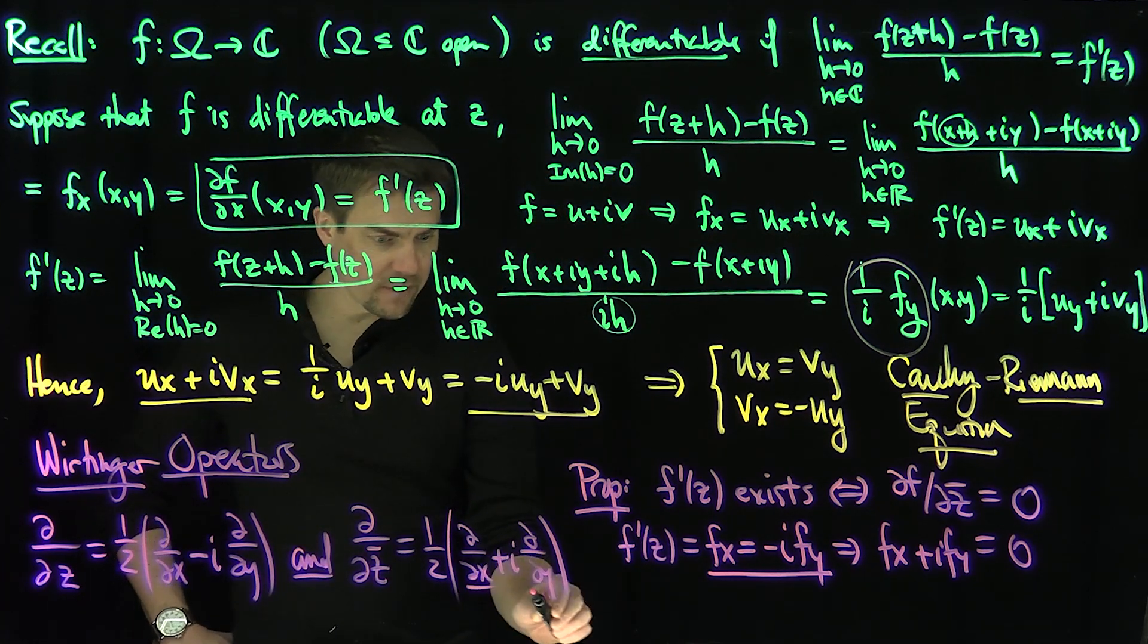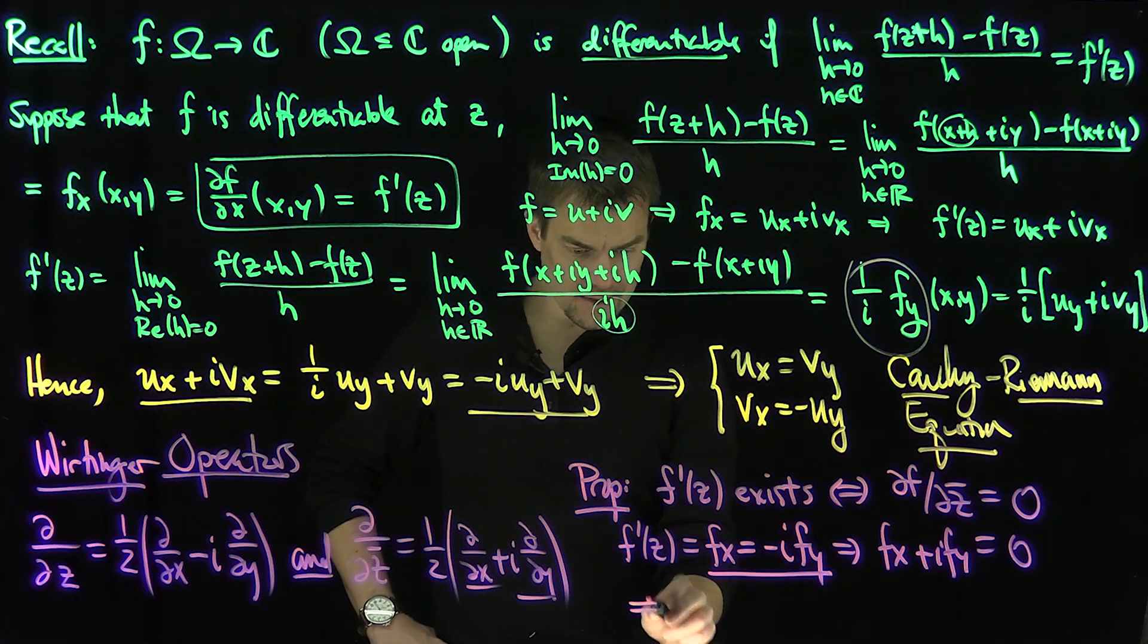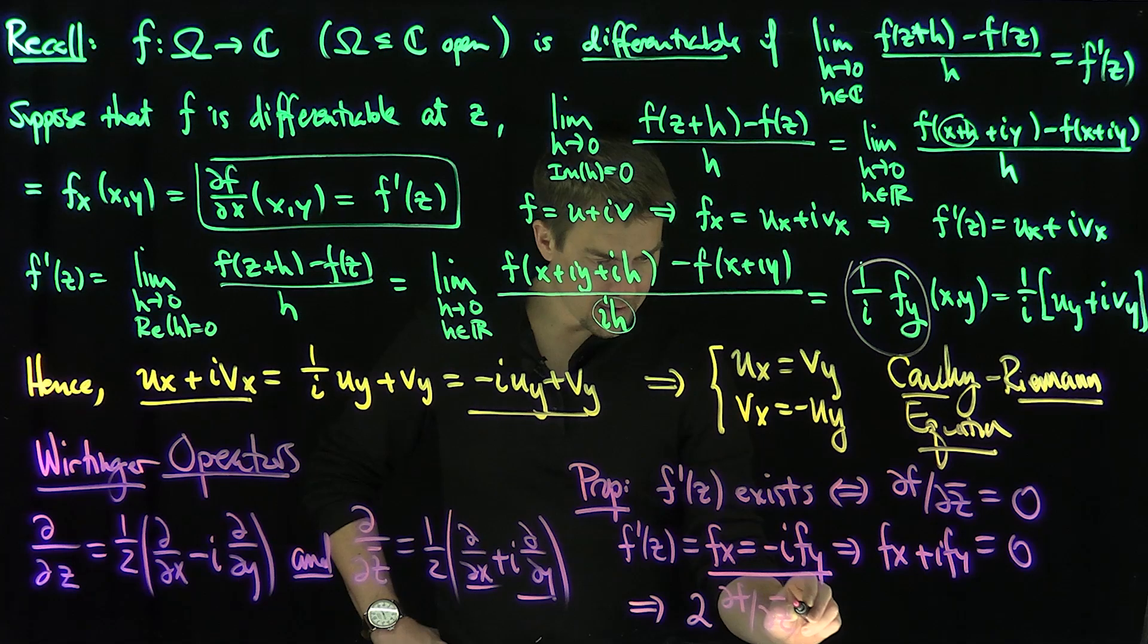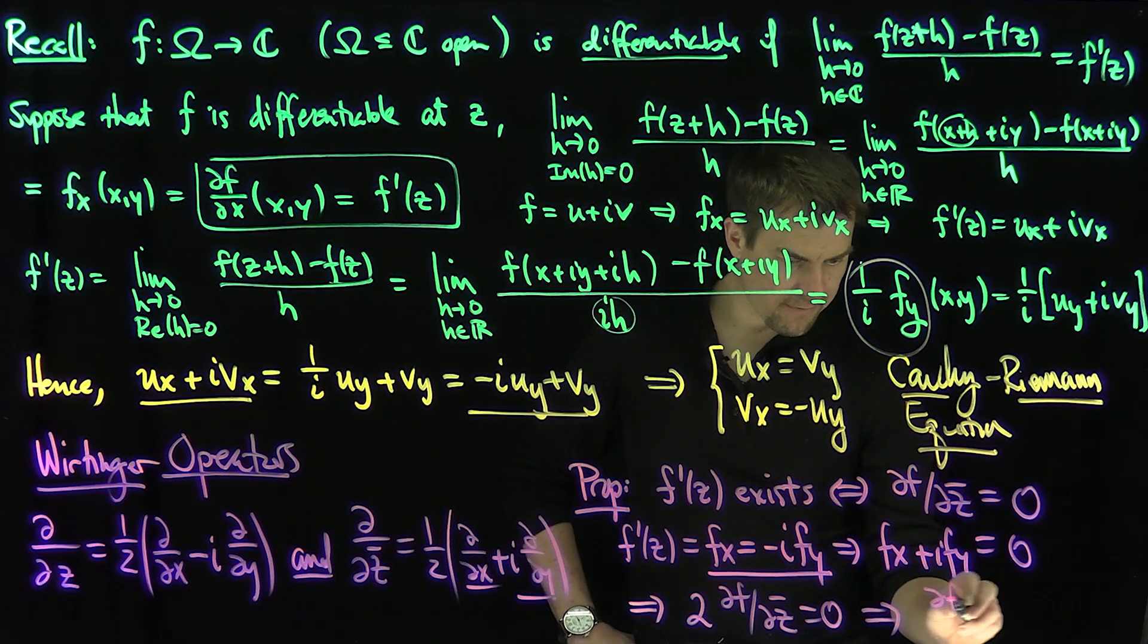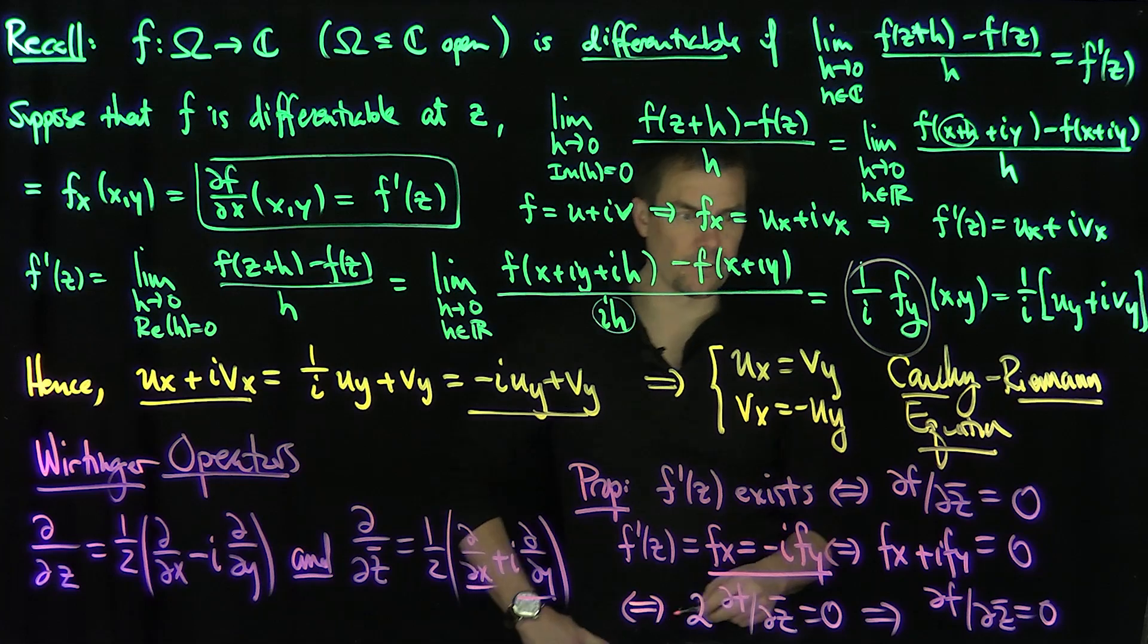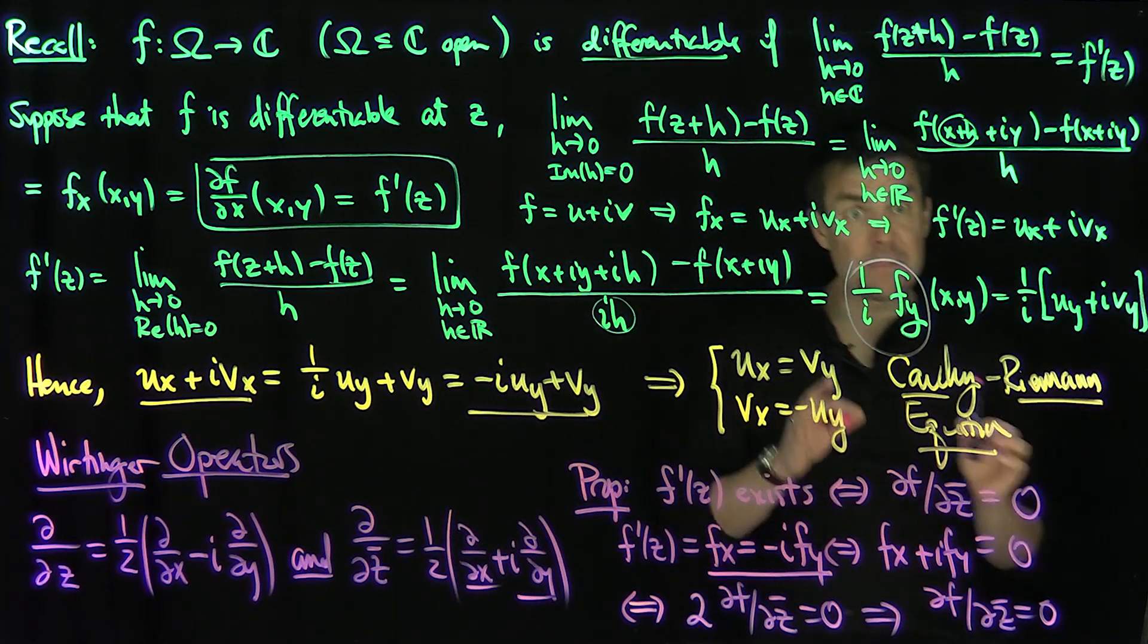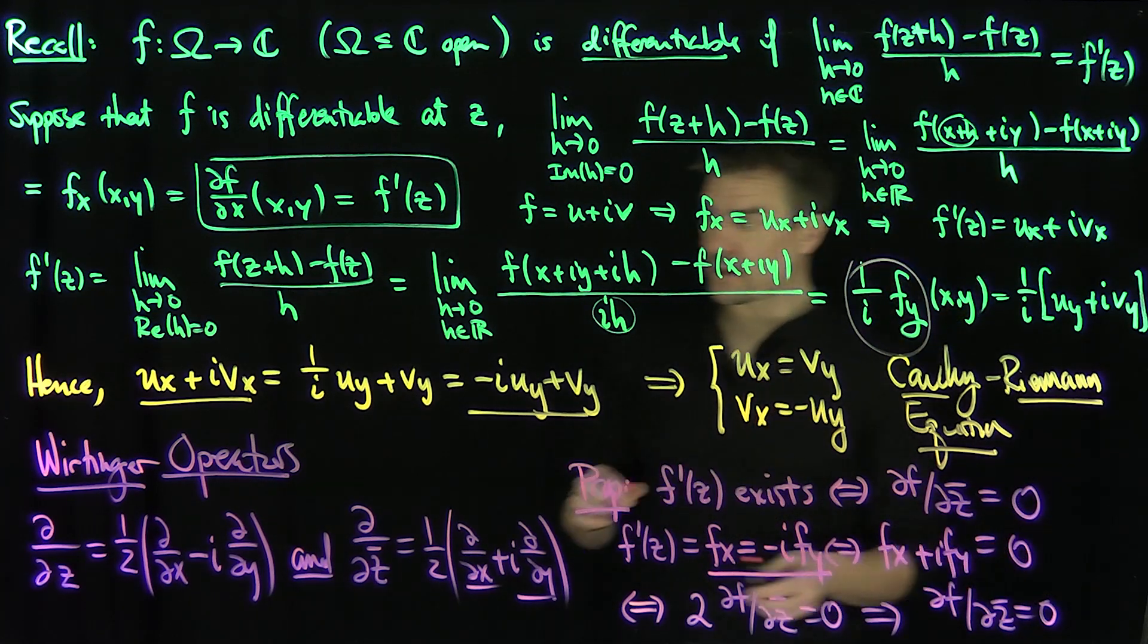But look at this differential operator—there's an x derivative plus i times y derivative. This expression is the same as saying 2·∂f/∂z̄ = 0, which is equivalent to ∂f/∂z̄ = 0. All these are if and only ifs.